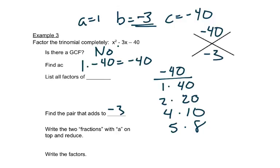But if I want a negative 40, then I need one number to be negative. And if I want it to add to be negative, I want my bigger number to be negative, because remember the bigger number controls the sign of addition. So now I can go back and I see which pair of these adds up to be a negative 3. And that would be this one. So I'd have a 5 and a negative 8.